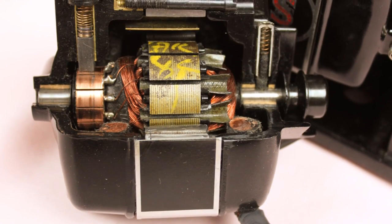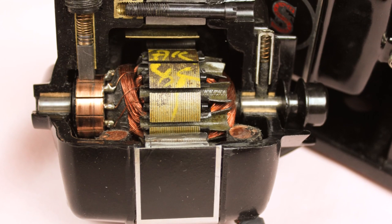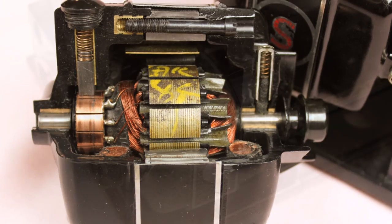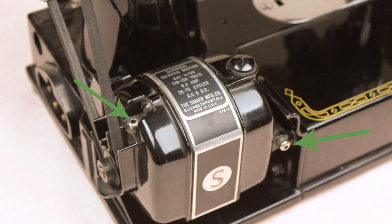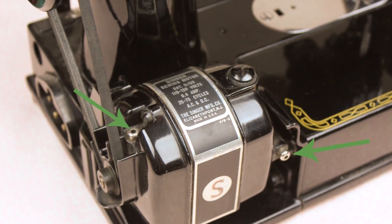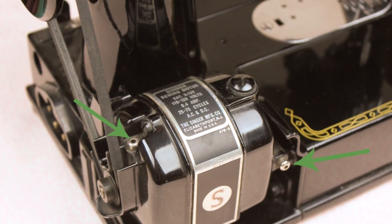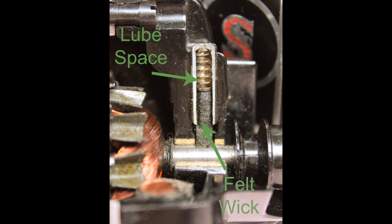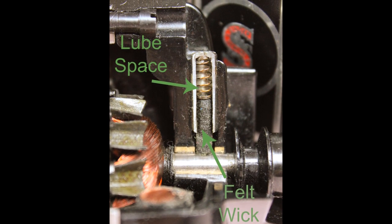This is a cutaway view of the Featherweight motor that was given to me by Dave McCallum, and it offers an excellent view of where the lubricant goes inside the motor. The Featherweight motor has two lubricating ports, one on the top by the belt and one on the back of the motor. Inside each port is a felt wick as well as some space to hold the lubricant.